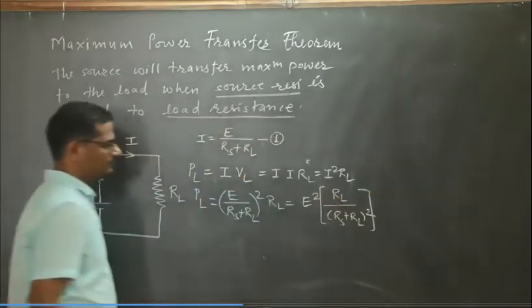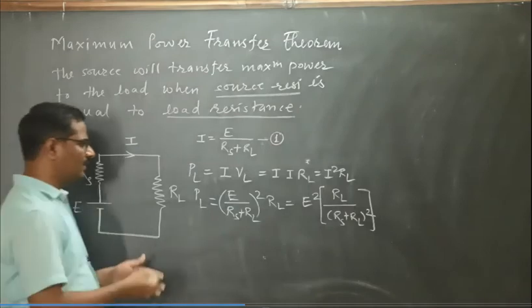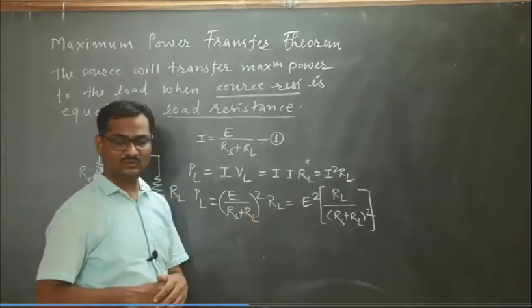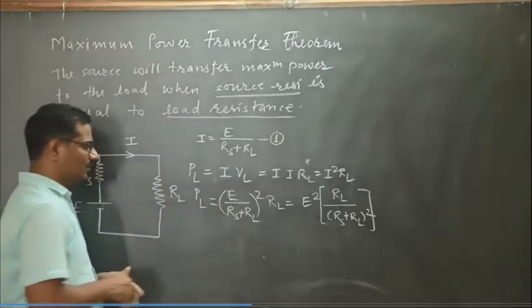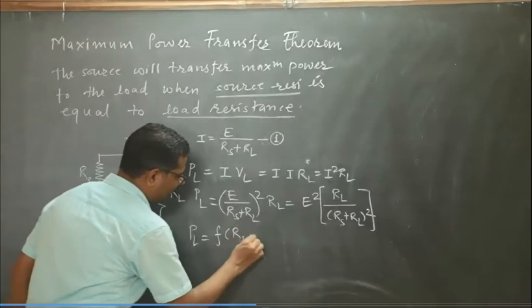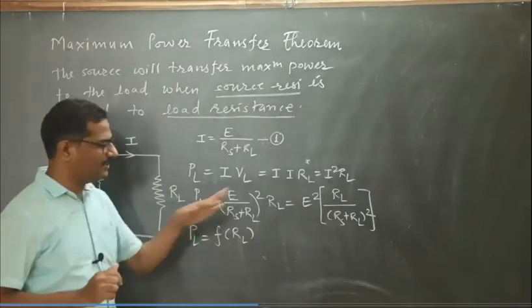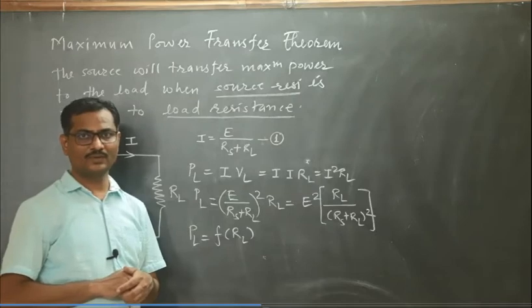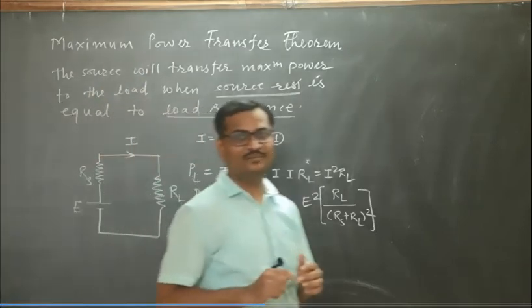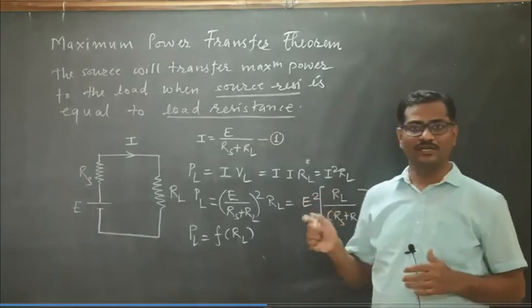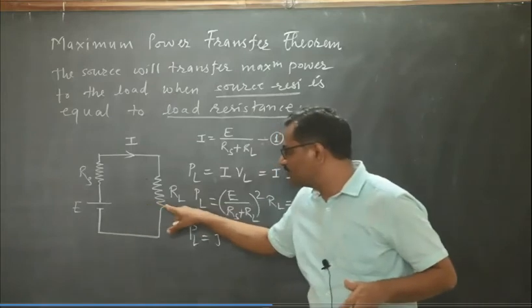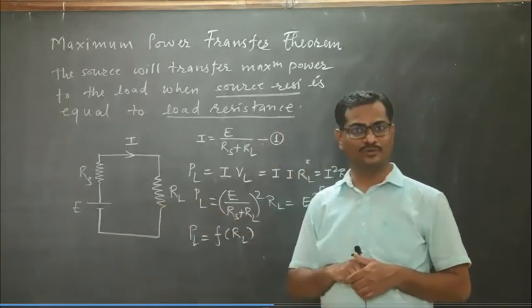Now let's assume that the EMF of the source and source resistance RS are fixed, so PL will be a function of RL only — that means PL is only dependent on RL. We have to prove this theorem, and to find the condition for which the source will transfer maximum power to the load.